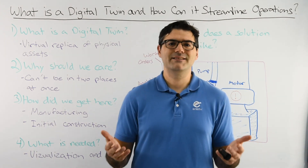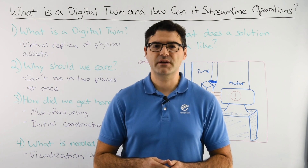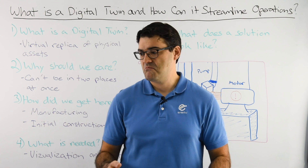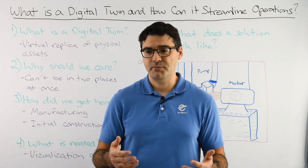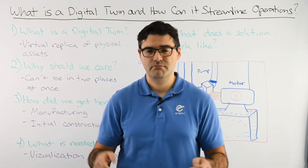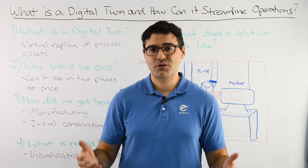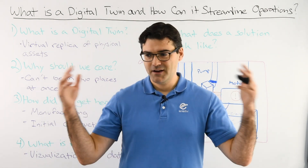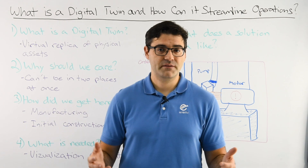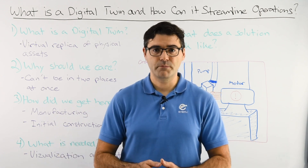So what's needed to actually create a digital twin? Two things. First is visualization — you need to see the asset. That can be done through a BIM model that helps you understand how a building is set up, its structure, so everyone's on the same page. It could be through a 3D scan or a point cloud, allowing you to understand a space in utter detail. Or it could be as simple as photographs of the space and all the major pieces of equipment in your buildings.